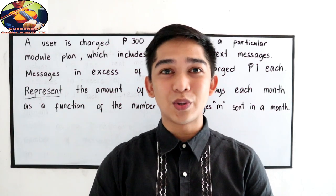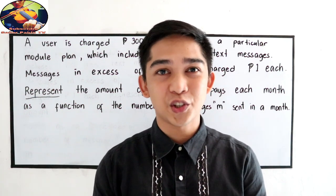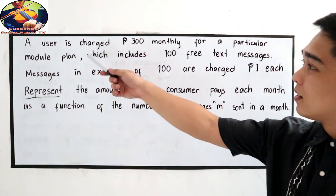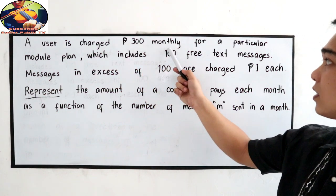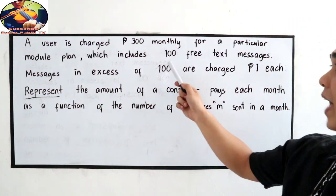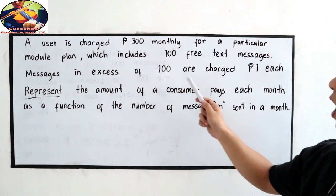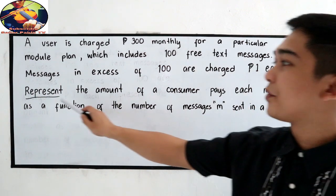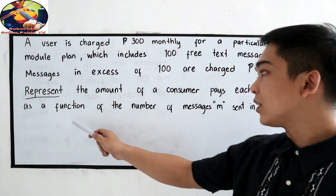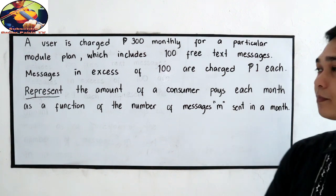In this lesson, we're going to discuss some applications of piecewise functions in a real-life situation. Let's start with example number one. A user is charged 300 pesos monthly for a particular mobile plan, which includes 100 free text messages. Messages in excess of 100 are charged 1 peso each. Represent the amount a consumer pays each month as a function of the number of messages M sent in a month.